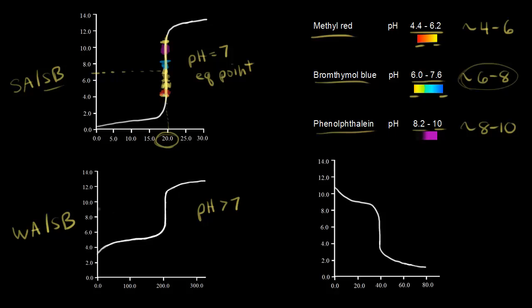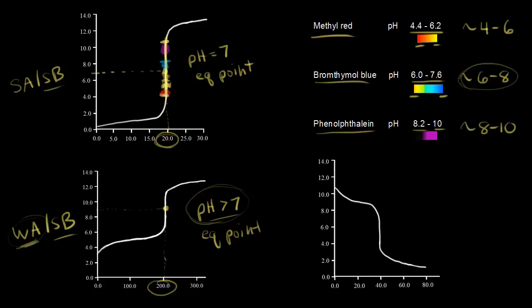In our example, the pH was close to nine — just under nine — and it took about 200 milliliters of our strong base to reach the equivalence point. The reason the pH is greater than seven is that when you've neutralized all of your weak acid, you're left with the conjugate base, which reacts with water to increase the concentration of hydroxide ions in solution. Watch the video for this titration if you want to see the exact calculation.